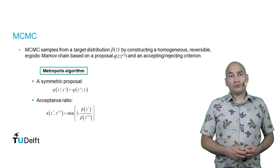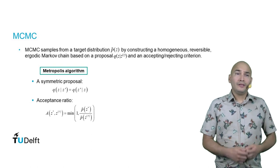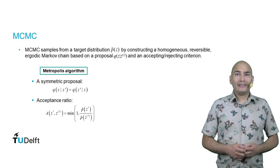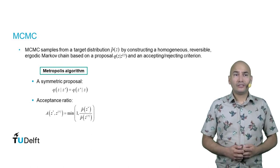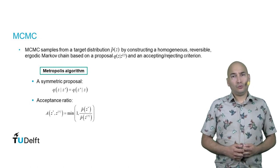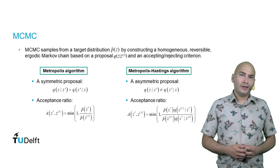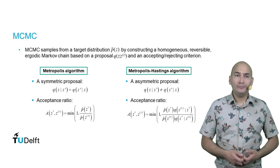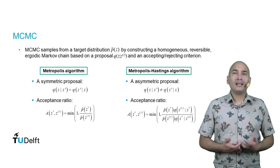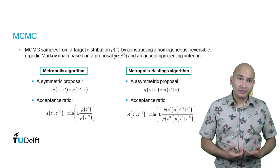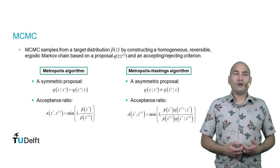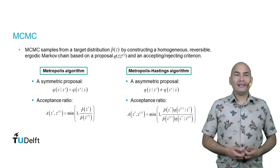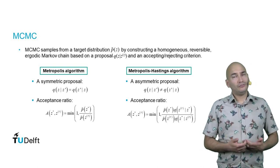In the Metropolis algorithm, the proposal is symmetric and the acceptance ratio is calculated in this way. Whereas in the Metropolis-Hastings algorithm, the proposal can be asymmetric and the calculation of the acceptance ratio has an additional ratio.